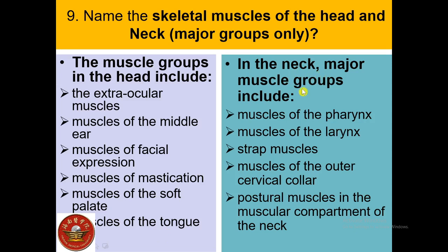The major muscle groups of the neck include: muscles of the pharynx, which constrict and elevate the pharynx; muscles of the larynx, which adjust the dimension of the airway; strap muscles, which position the larynx and hyoid bone; muscles of the outer cervical collar, which move the head and upper limbs; and postural muscles in the muscular compartment of the neck, which position the neck and head.